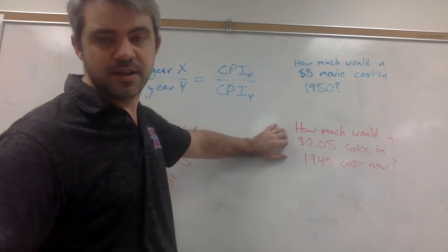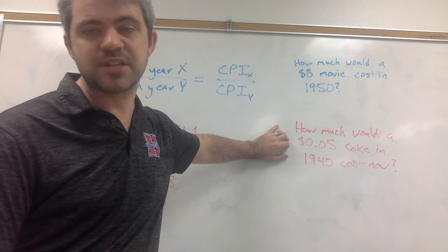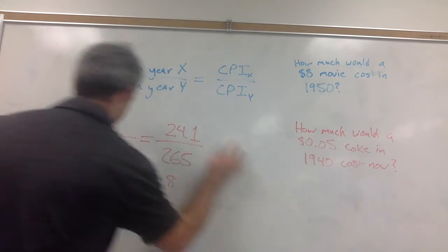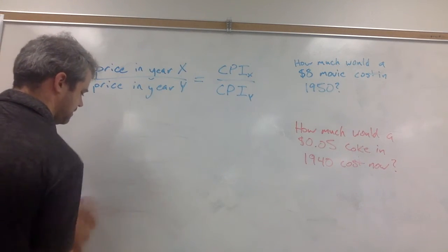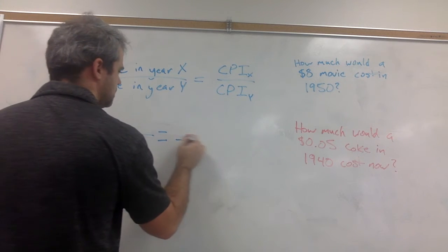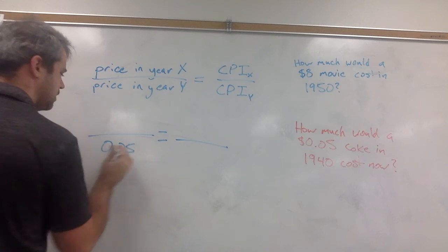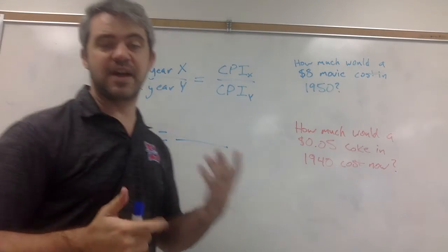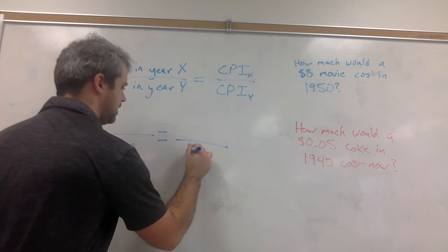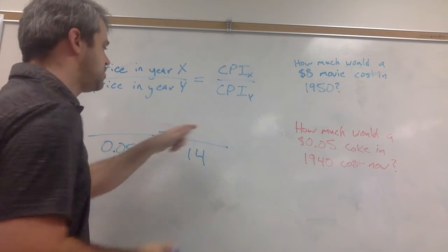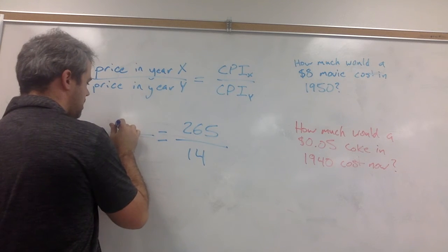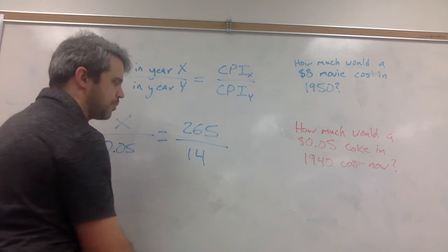Okay, let's try this again. So how much would a 5-cent Coke in 1940 cost now? Well, let's take our 5-cent Coke. We have to find the CPI for 1940, which appears to be 14. And then we do the CPI for today, which is 265. And then we don't know what the price is today.